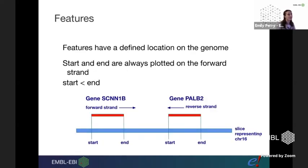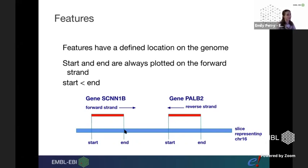Features always have a defined location with a start and end, where the start is always the smaller — most five-prime — number. For a gene on the forward strand, the start is the transcription start site. For a reverse strand gene, the start is the most five-prime compared to the chromosome, which is actually the transcription end. The end of the gene feature is the most three-prime on the chromosome, which in this case is the transcription start site. This is something to be aware of.